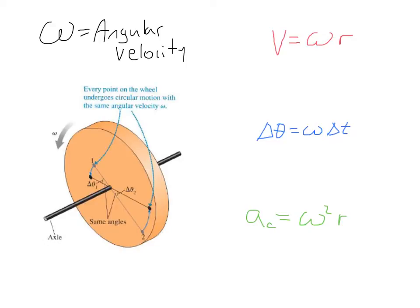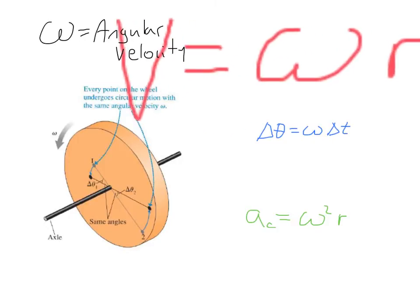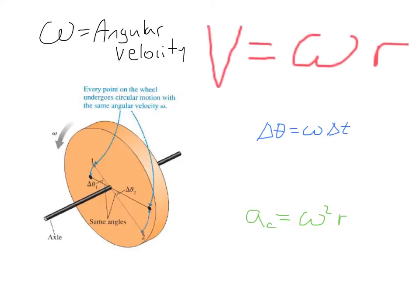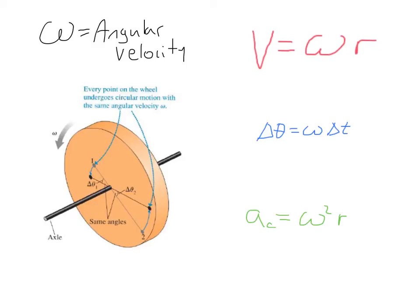When we talked about circular motion, the velocity of a particle is equal to the angular velocity times the distance from the center. This means two points on a rotating object will have different speeds if they are at different distances from the axis of rotation, but all points on that rotating object have the same angular velocity. The angular velocity is one of the most important parameters in rotating objects.